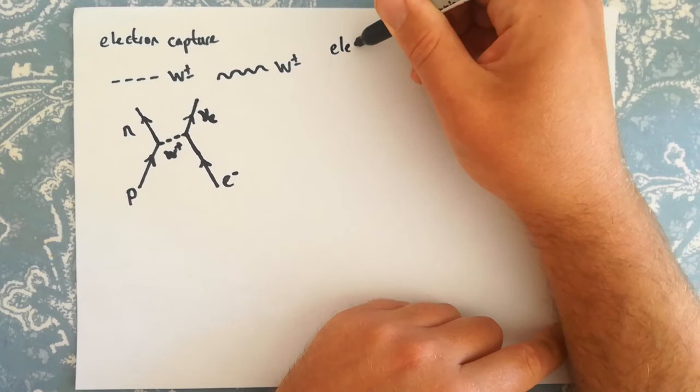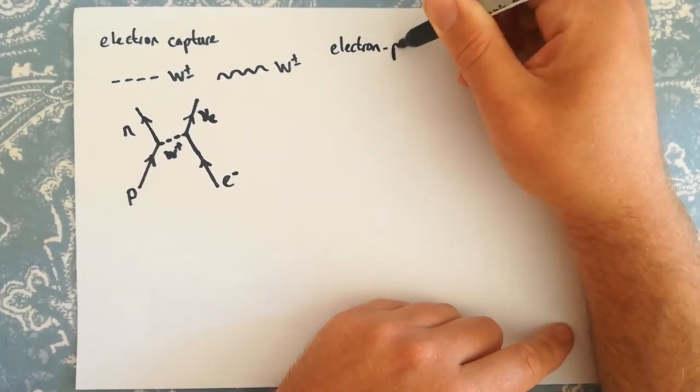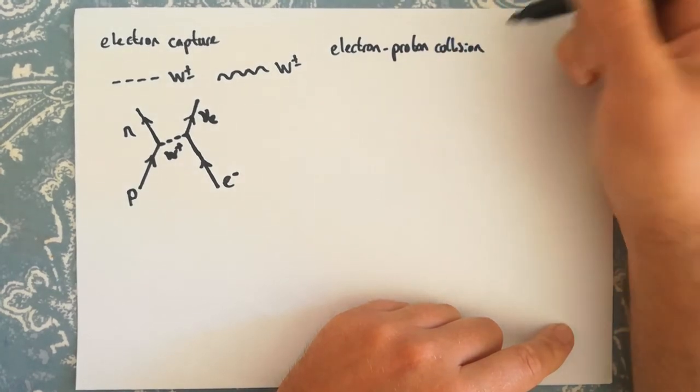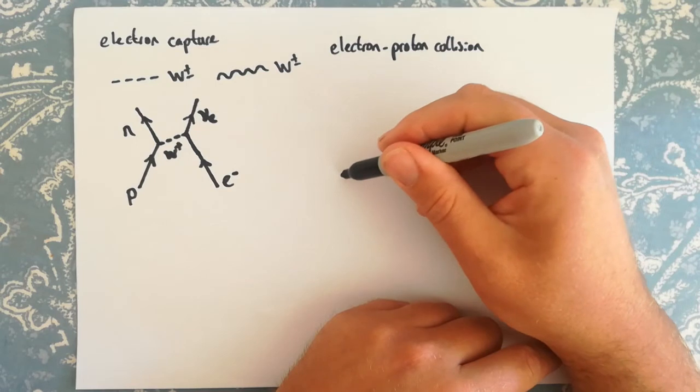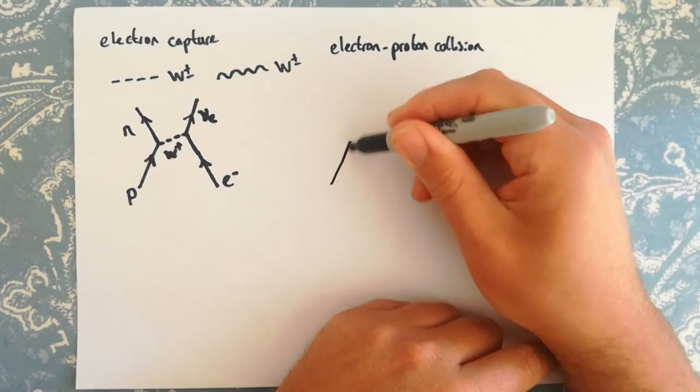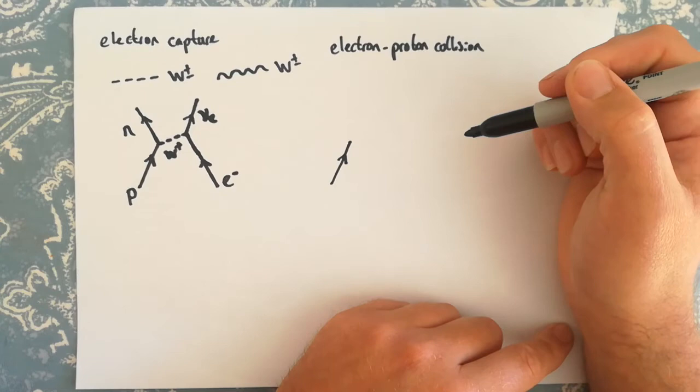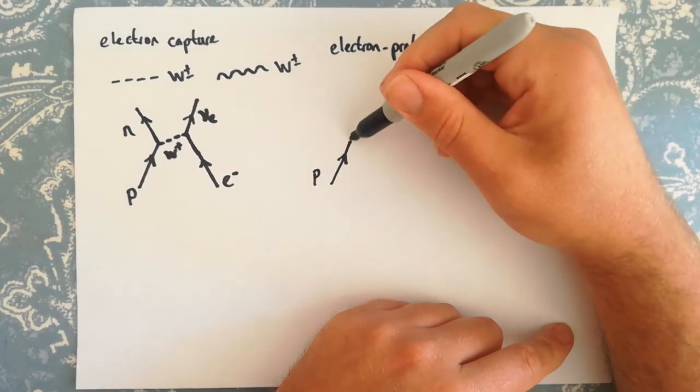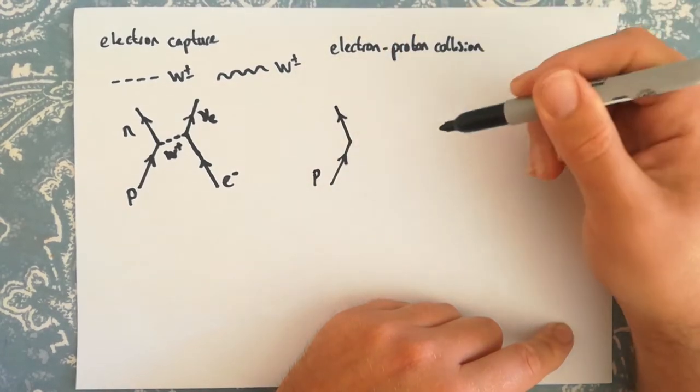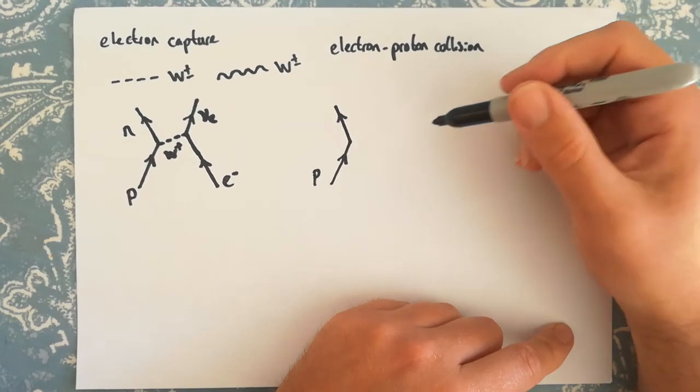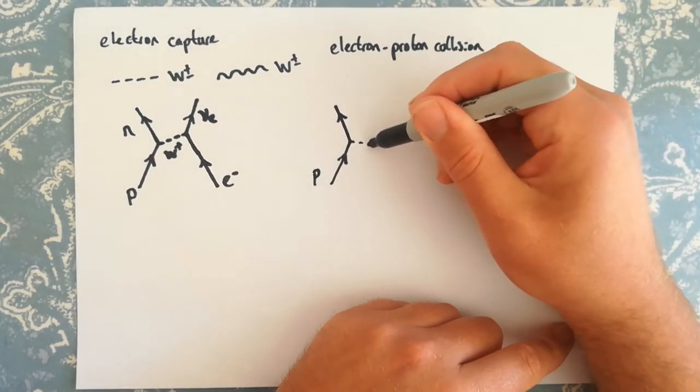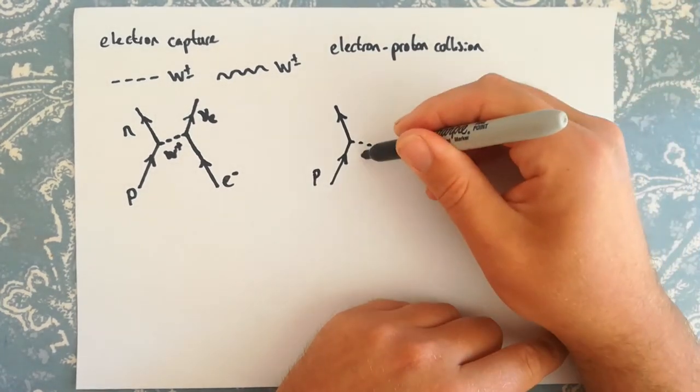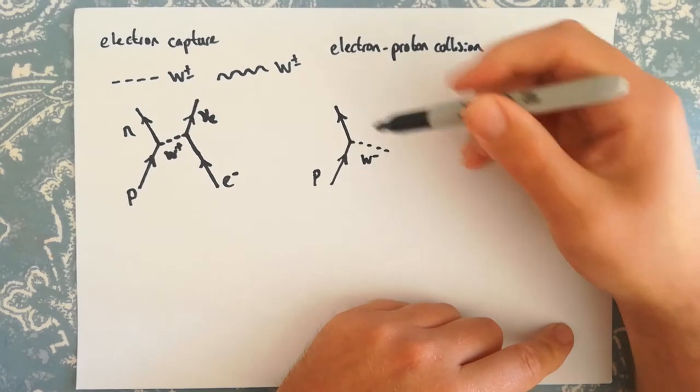Now, an electron-proton collision is really the same process. This is one of those examples of having two different Feynman diagrams, and they are distinct Feynman diagrams, but the result is the same in terms of what you would observe happening. In this case, it seems that these two processes, these two Feynman diagrams, have been given different names.